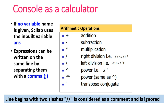Scilab can be used as a calculator. If no variable is assigned to store the output, by default the result is stored in the variable ans. To separate multiple expressions, use a comma. Scilab supports all basic arithmetic operations: addition, subtraction, multiplication, division, and power. Power can be done using the caret symbol (^) or double asterisk (**), and the transpose conjugate uses a dash symbol.